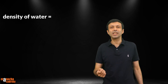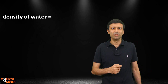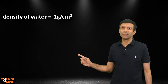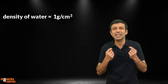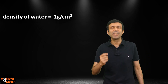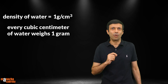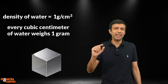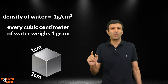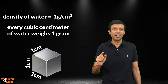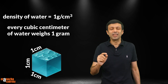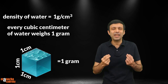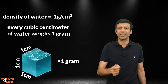The density of water in CGS unit is a very simple value. It is 1 gram per centimeter cube. This means every centimeter cube of water weighs 1 gram. You can visualize this by taking a tiny cube of size 1 cm × 1 cm × 1 cm. If you fill it with water, the mass of the water in that is going to be 1 gram. So every centimeter cube of water weighs 1 gram.